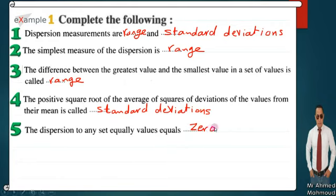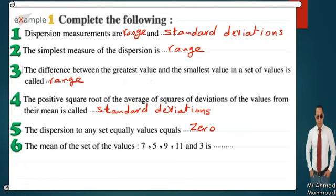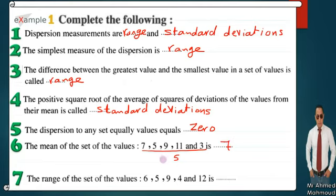Question 6: Find the mean of the values 7, 5, 9, 11, and 3. Mean = (7 + 5 + 9 + 11 + 3) / 5 = 35 / 5 = 7. Question 7: Find the range of the set of values 6, 5, 9, 4, and 12. The biggest number is 12 and the smallest is 4, so range = 12 − 4 = 8.